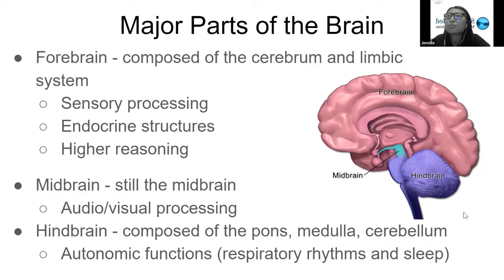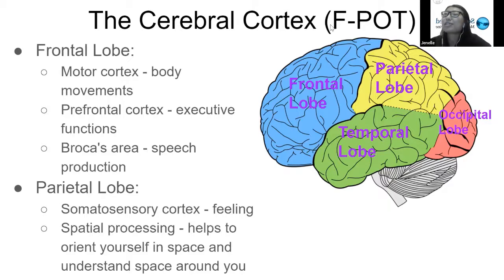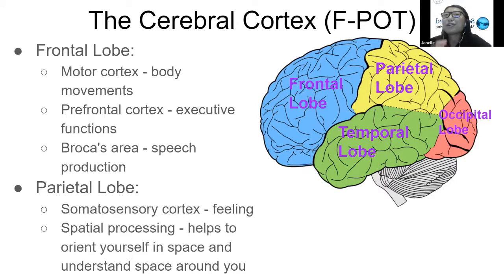So those are the major parts. Now we're going into the cerebral cortex. A really common acronym for knowing the parts of the cerebral cortex is FPOT: F for frontal lobe, P for parietal lobe, O for occipital lobe, and T for temporal lobe. It's really good to know the major functions of all of them.